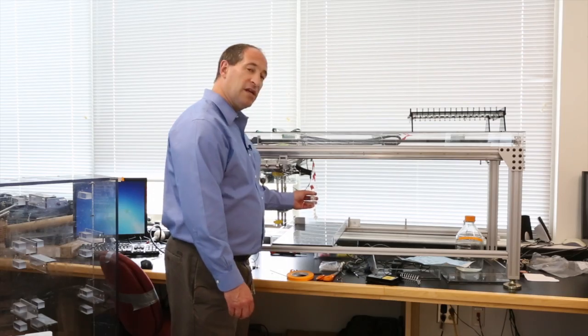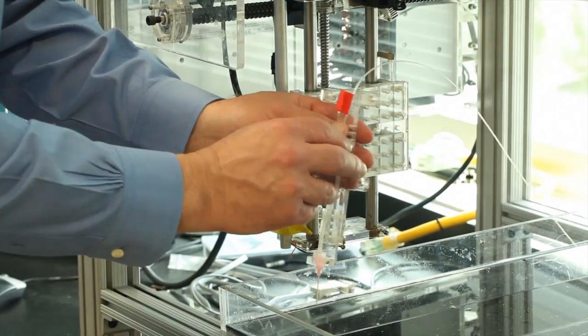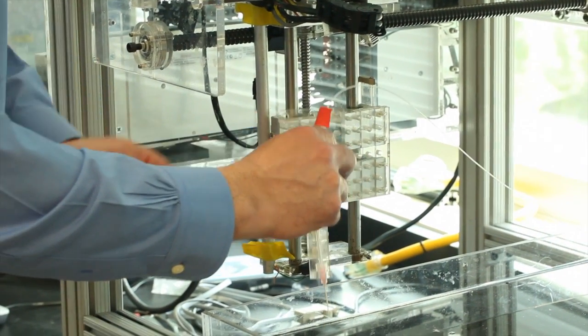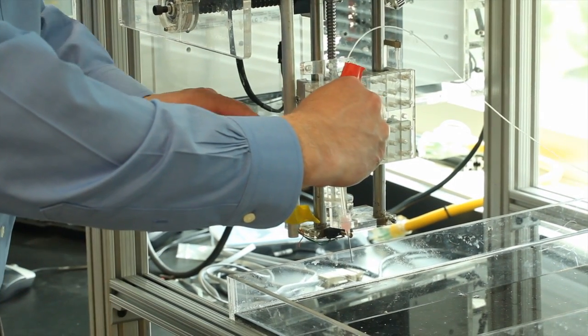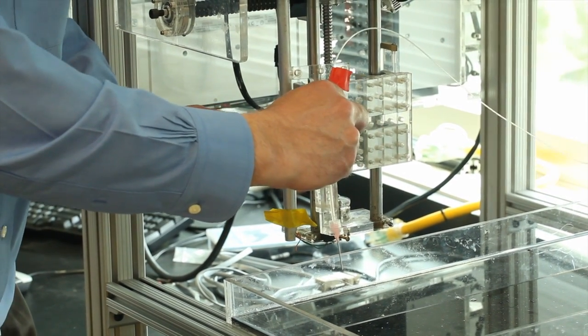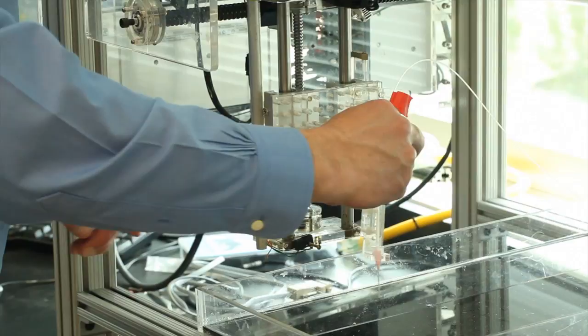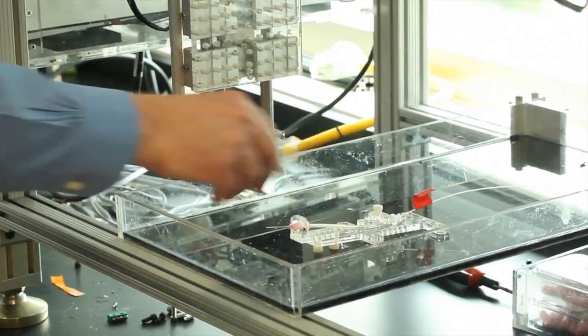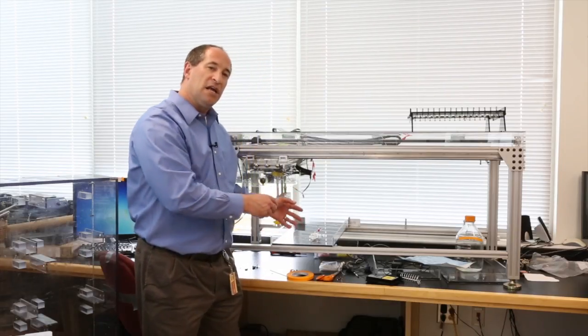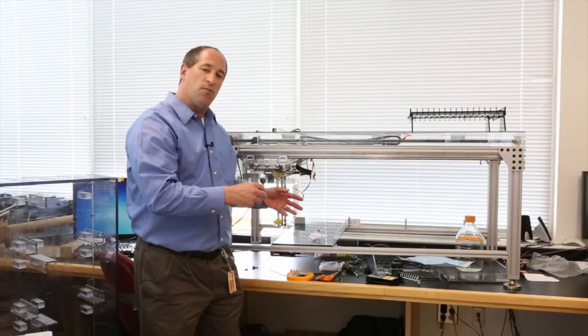To make our fibrin sutures we co-extrude fibrinogen and thrombin through this syringe, which attaches to this piece here. This is essentially a three-axis machine which allows it to go back and forth and makes lines of fibrin, essentially a thread.